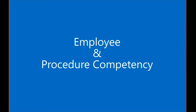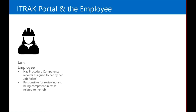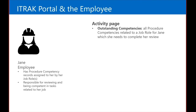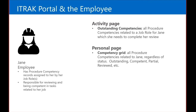Now we're going to review how the employee interacts with procedure competency. Jane has employee competency records assigned to her and is responsible for reviewing and achieving competency in tasks related to her job. In the iTrack portal, she has an activity page with a grid called 'Outstanding Competencies' — all procedure competencies related to a job role that Jane needs to complete will be here. She also has her personal page with a competency grid showing all her procedure competencies regardless of status: outstanding, competent, partial, or reviewed.